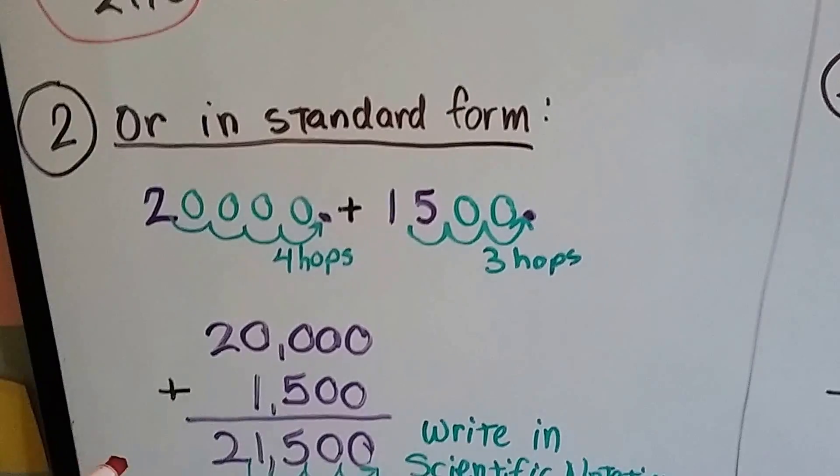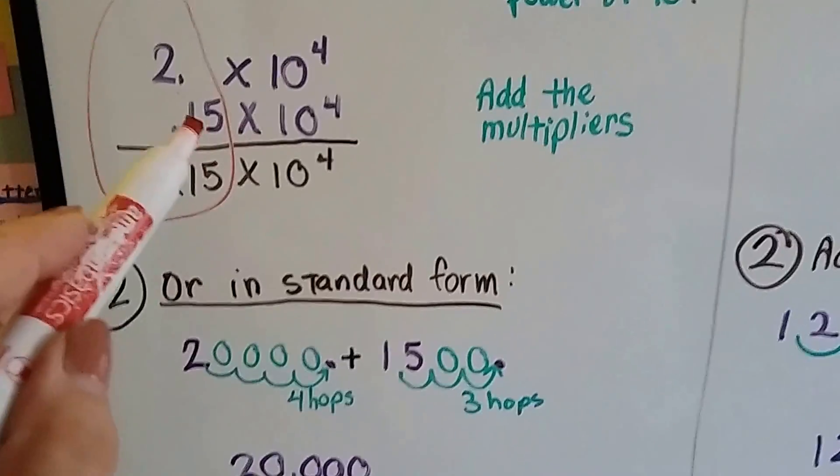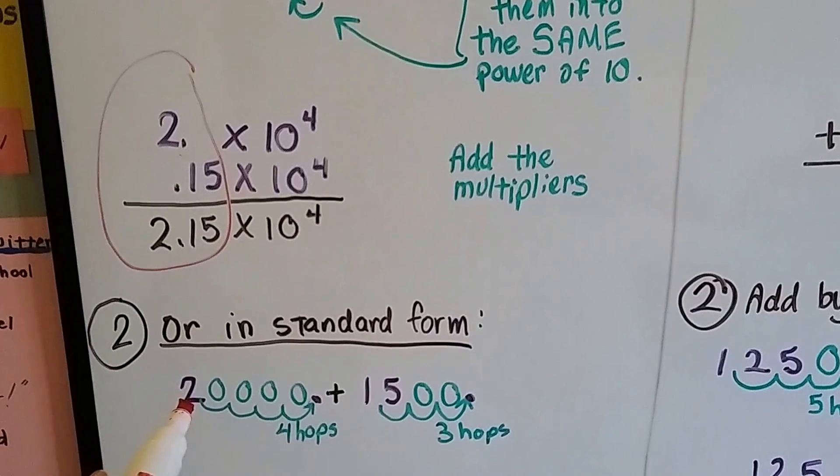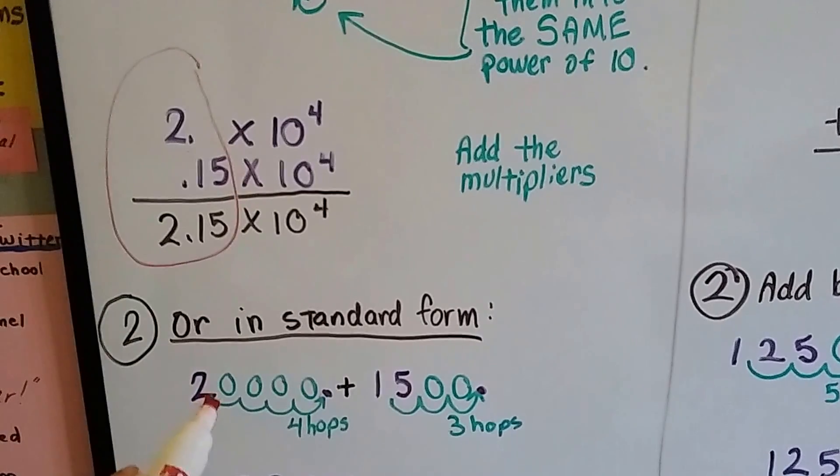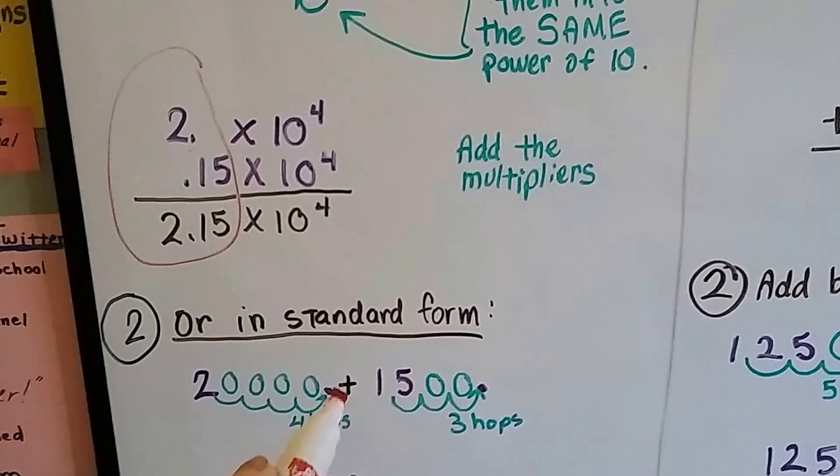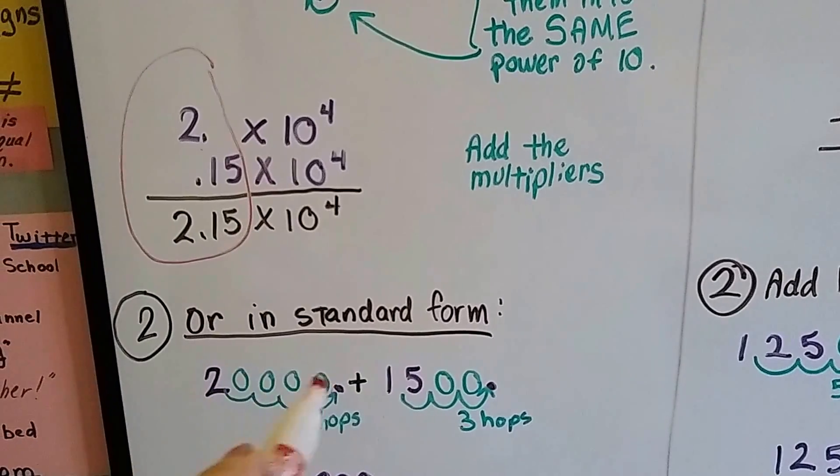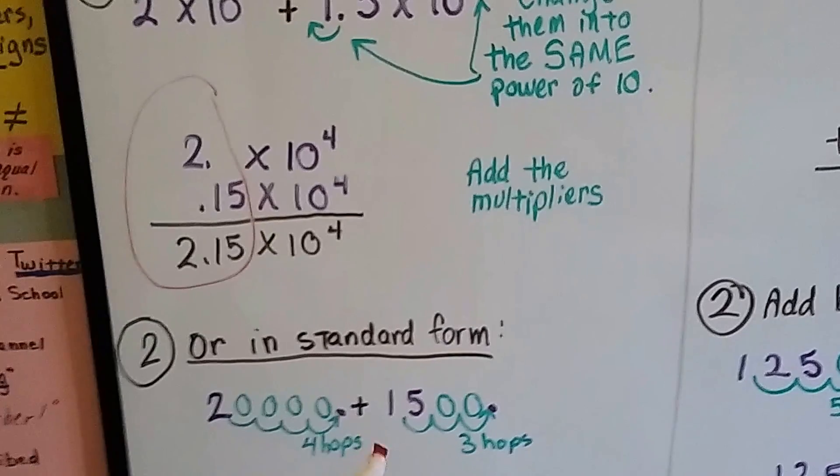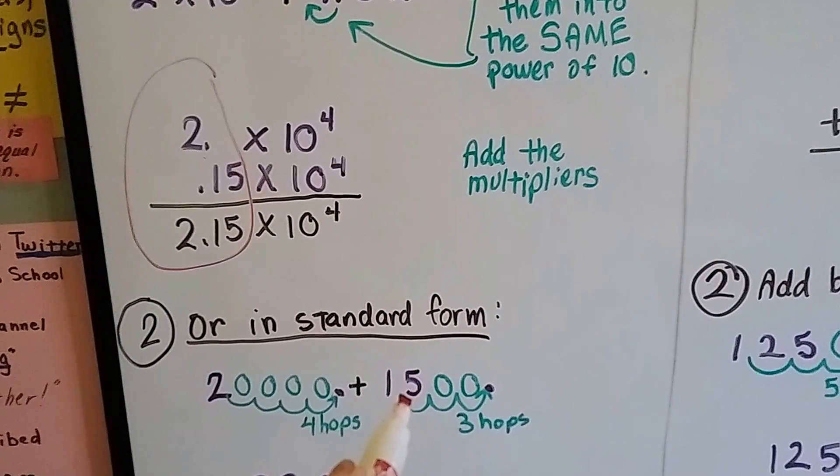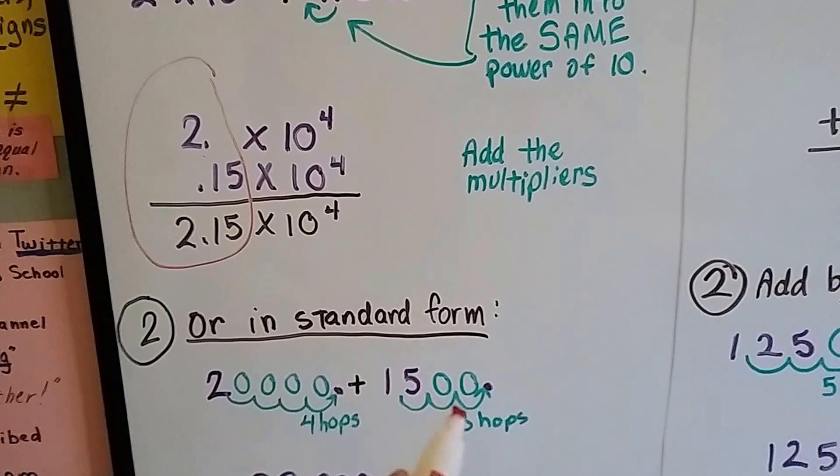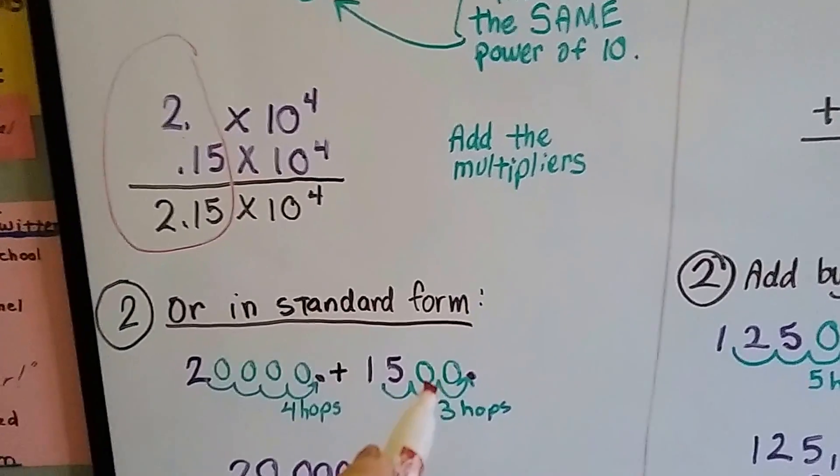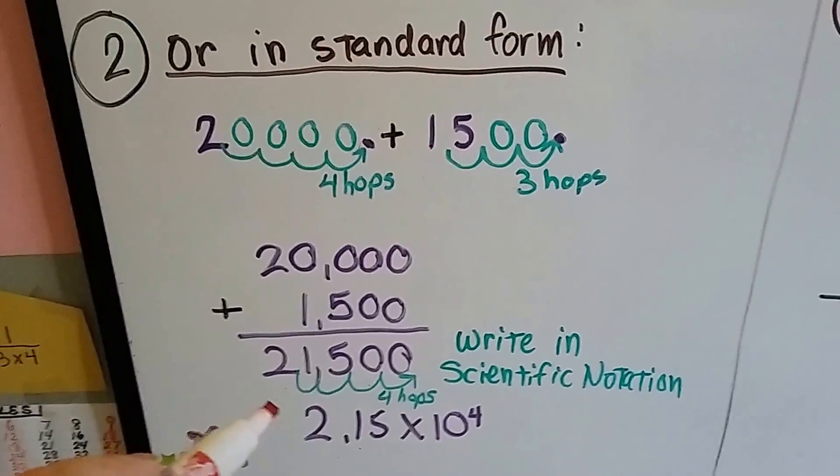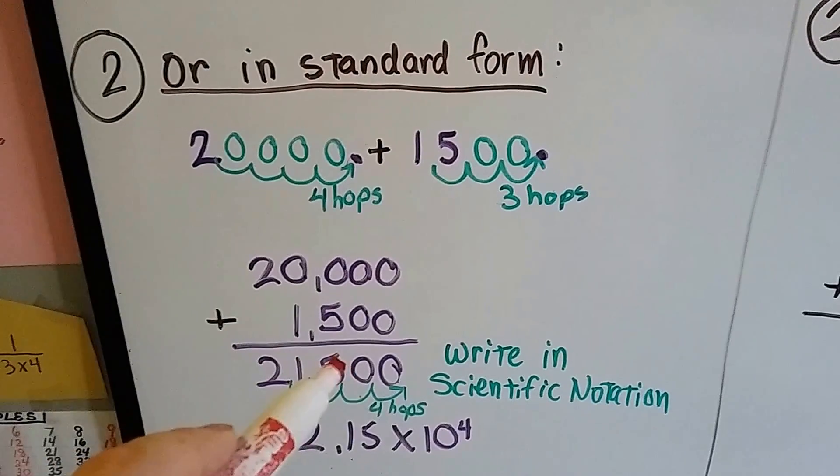Now we can also do it in standard form. All I have to do is change this 2 times 10 to the 4th power into a 2 with 4 zeros. I move it over 1, 2, 3, 4 hops. I add my zeros as placeholders. And then for this one, the 1.5 times 10 to the 3rd, I move the decimal point from between the 1 and the 5, three hops: 1, 2, 3. I put in my zero placeholders. And now I've got 20,000 plus 1,500, and I can add them together and get 21,500.